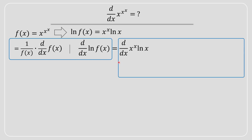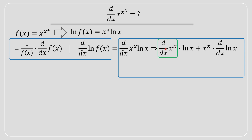The right-hand side is a bit trickier — there are more steps. Notice this calls for a product rule, because we have x to the power of x multiplied with ln(x): two functions both containing x, so we apply the product rule.